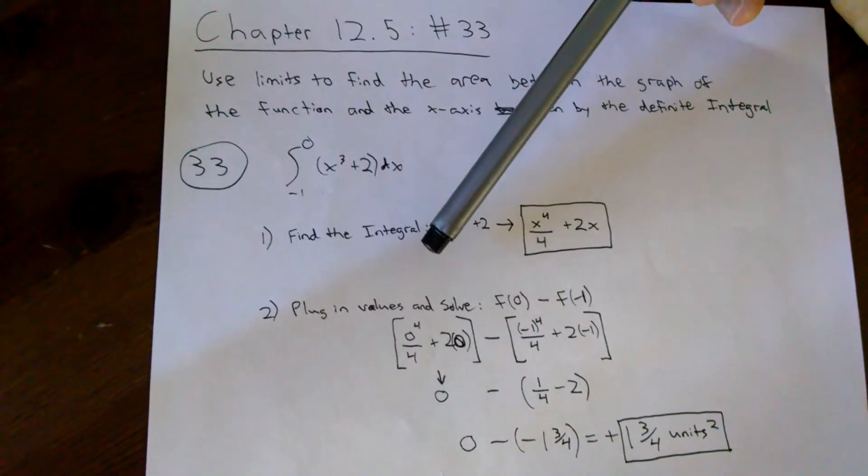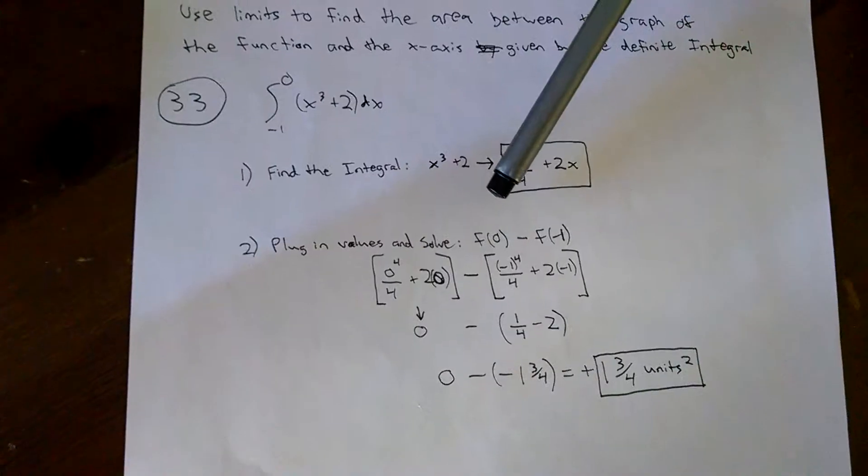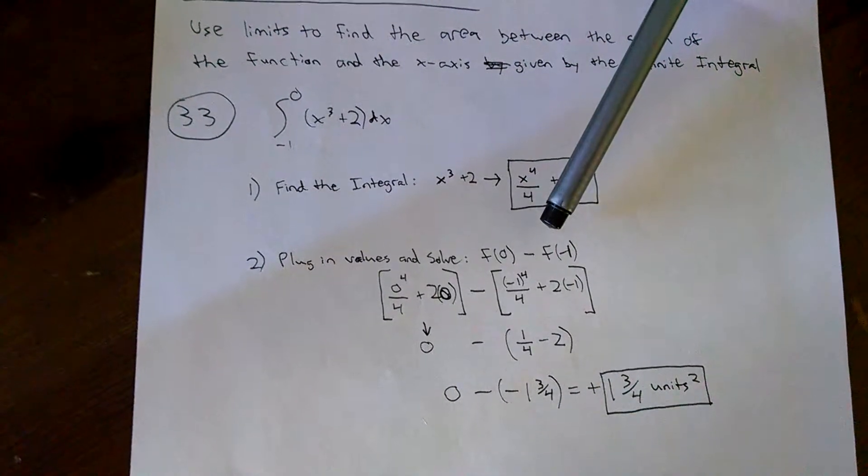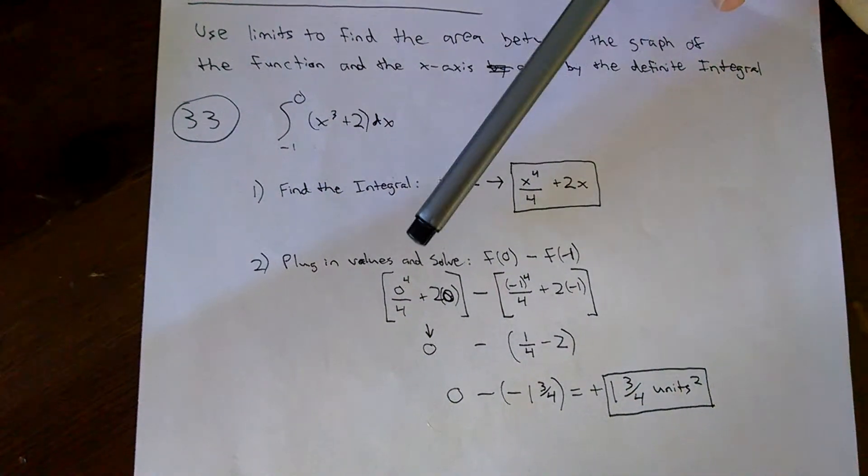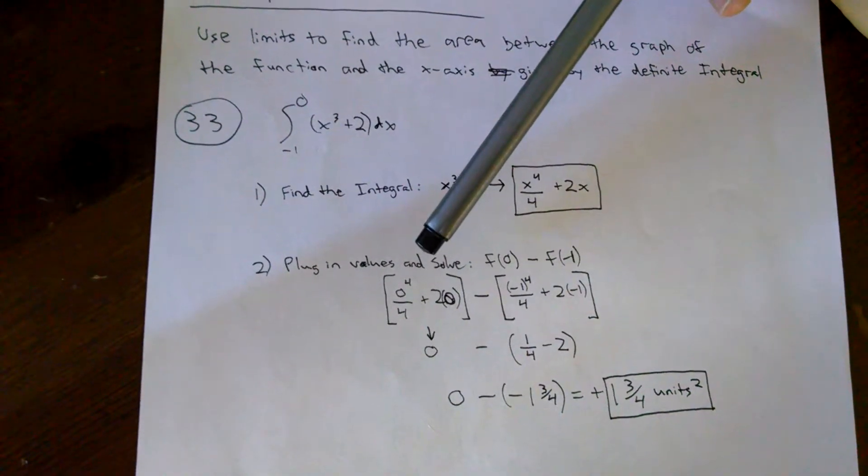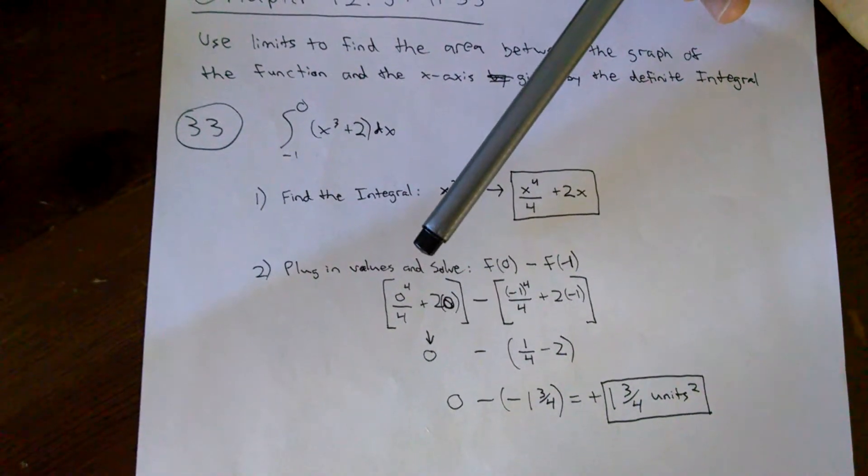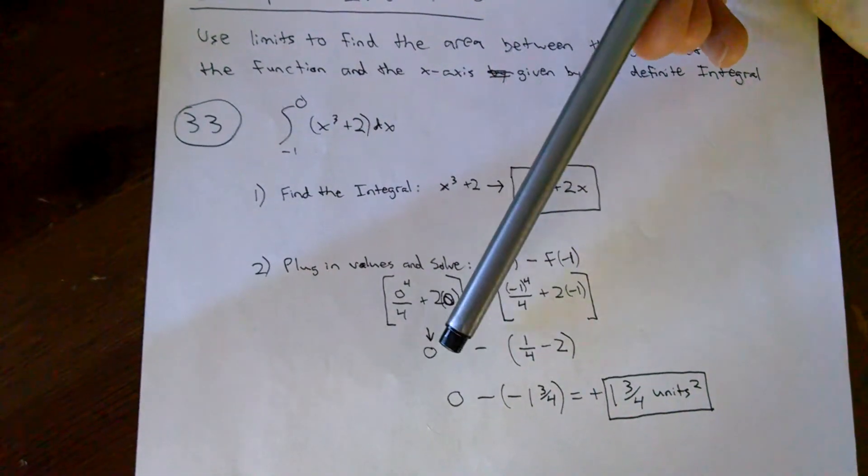Now we can plug in our limits and solve. We have f(0) minus f(-1). f(0) gives us 0⁴/4 + 2(0), which equals 0.